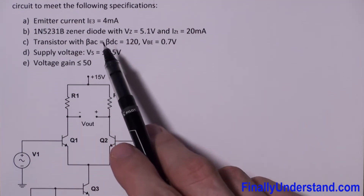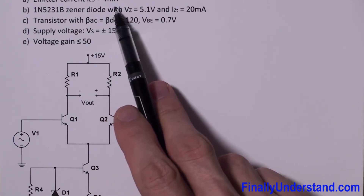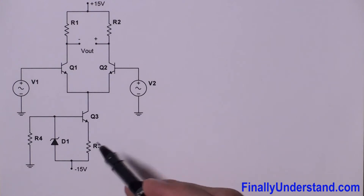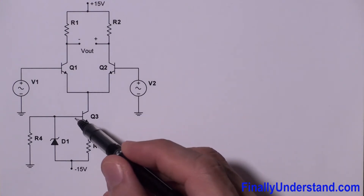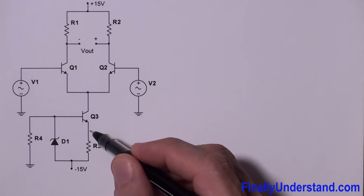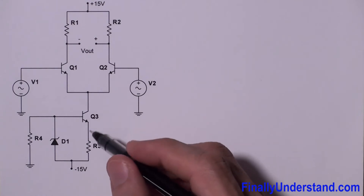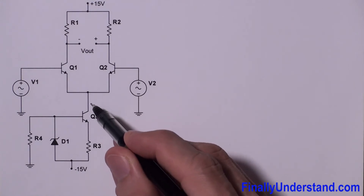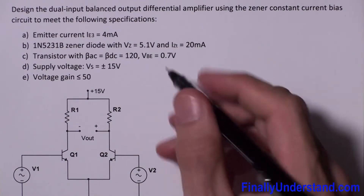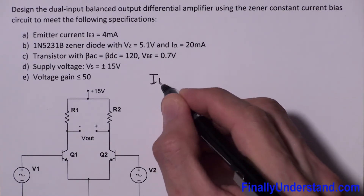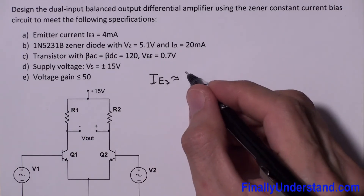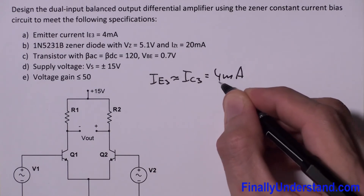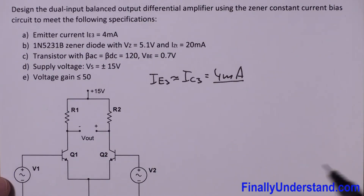We are given current IE3 equal to 4 milliamps. This is the current which will go through this resistor. We're supposed to realize that the base current is very small compared with the value of IE3. So I can say that IE3 is approximately equal to IC3. This is very important: IE3 ≈ IC3 = 4 milliamps.